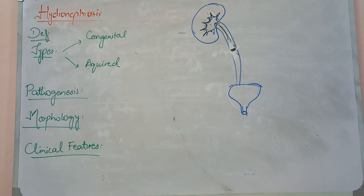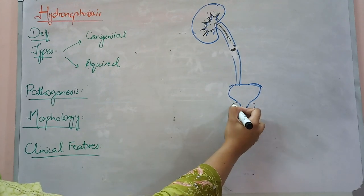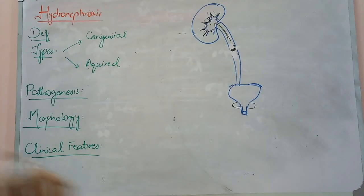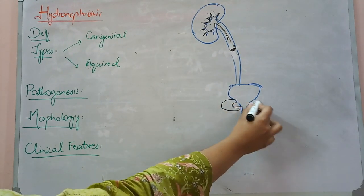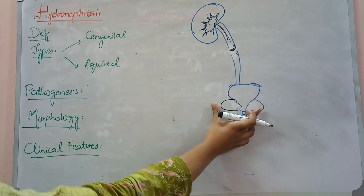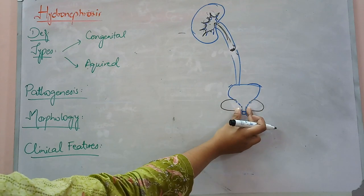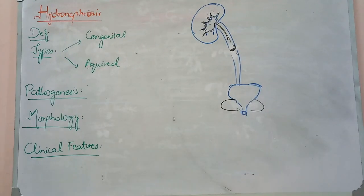Another thing is a proliferative lesion. A proliferative lesion means a structure that has expanded and compressed our urinary tract. For example, the urethra passes around the prostate gland in males. In older males, there is a common condition where the prostate gland enlarges, which we call benign prostatic hyperplasia. This benign prostatic hyperplasia will compress the urethra, and if it is compressed, the back pressure will increase and hydronephrosis will develop.